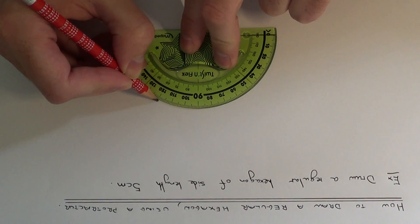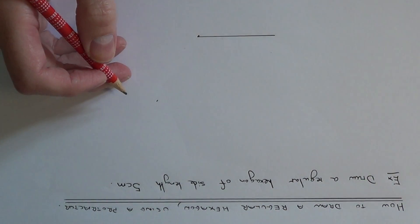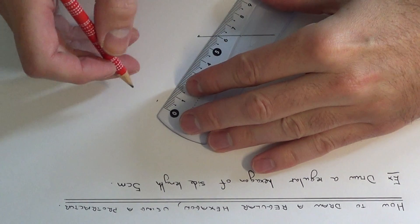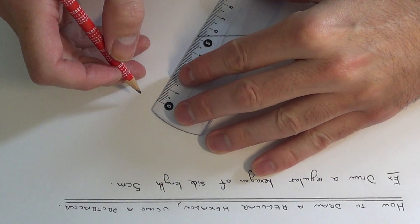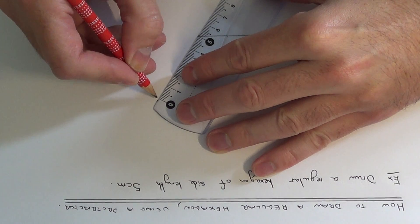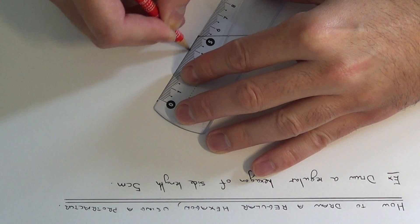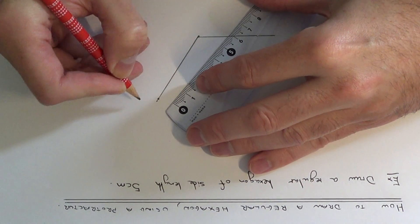If we just put a little marker there and join this point up, it should be 5cm long already. Just a little bit longer than this. Let's just make that 5cm.